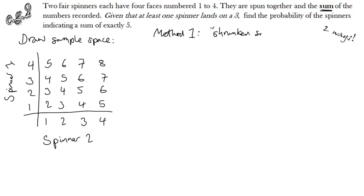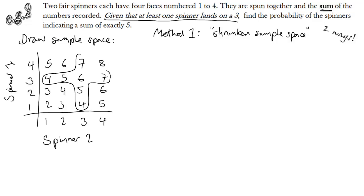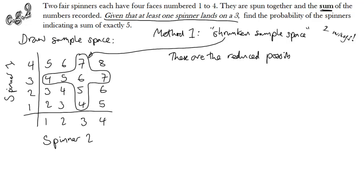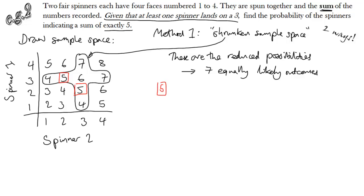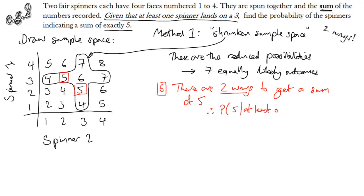Method 1 for doing this is called a shrunken sample space. Given that at least one spinner lands on a three, we're not picking from all sixteen anymore — we're picking from these seven outcomes that I have circled, the only ones that include at least one three. That's my shrunken sample space. So we're now picking out of seven, not sixteen. We need to know how many ways to get exactly five out of these seven. There are two ways, so the probability of getting a sum of five given at least one three is simply two divided by seven.